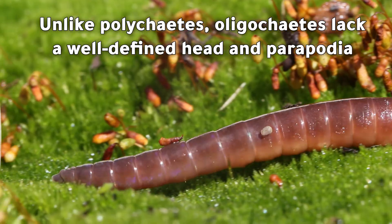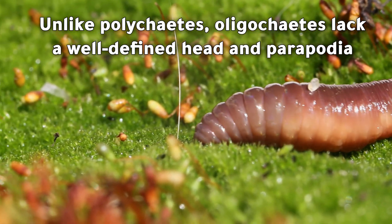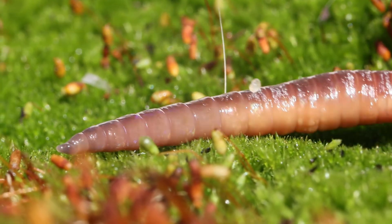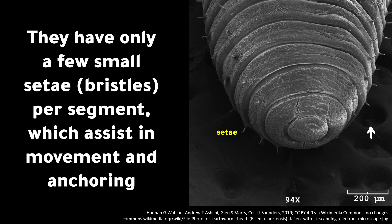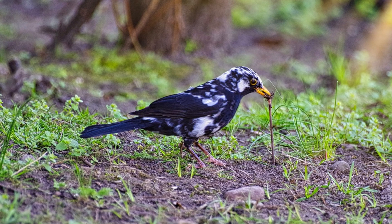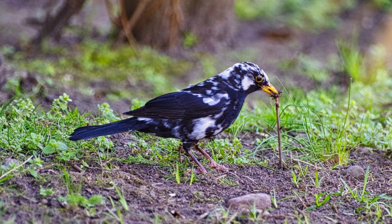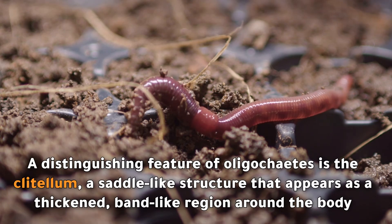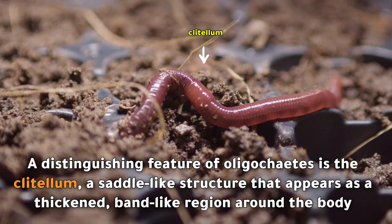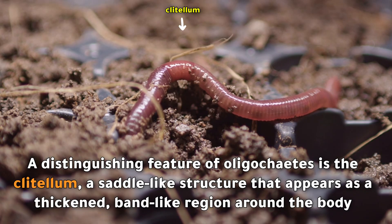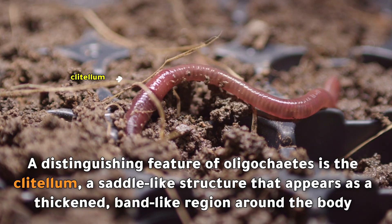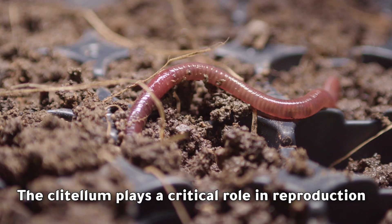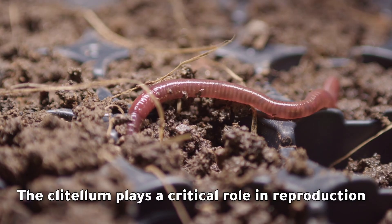Unlike polychaetes, oligochaetes lack a well-defined head and parapodia. They have only a few small setae per segment, which assist in movement and anchoring. A distinguishing feature of oligochaetes is the clitellum — a saddle-like structure that appears as a thickened band-like region around the body. The clitellum plays a critical role in reproduction.